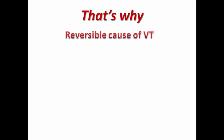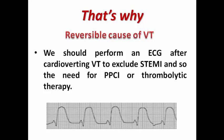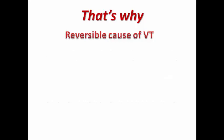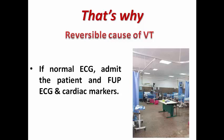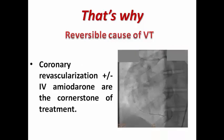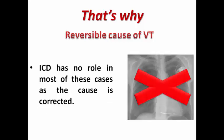MI is one of the reversible causes of VT, so we should perform an ECG after cardioverting the patient, as it may show ST elevation — and we can go directly for primary PCI or thrombolytic therapy if no cath lab is available. If the ECG after cardioversion is normal, admit the patient to the CCU and follow up ECG and cardiac markers, as the patient may have non-STEMI not evident on ECG. If MI is detected, coronary revascularization plus or minus IV amiodarone are the cornerstones of treatment, and ICD has no role since the cause is corrected.